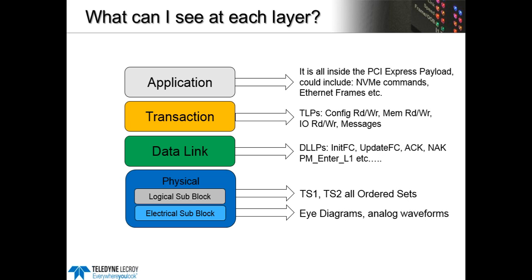If I take an analyzer trace and look at what I would see at each of these layers: at the very bottom we have eye diagrams — that's where we would use an oscilloscope to measure analog signal characteristics. Everything above the electrical sub-block we would use a protocol analyzer to look at. At the logical sub-block you're going to see TS1s, TS2s, and all ordered sets — patterns that allow a receiver to identify what the other side is sending. This became significantly more complex in Gen 3, where dynamic equalization was introduced — a protocol at the logical physical layer that actually adjusts the analog signal characteristics in the electrical layer.